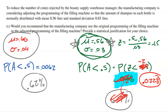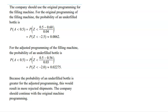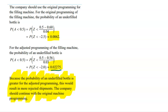The final conclusion stands: if we stay with the original parameters, we're less likely to have underfilled bottles. Because the probability of an underfilled bottle is greater under the adjusted programming, this would result in more rejected shipments. The company should continue with the original machine programming. Always write a clear concluding sentence — don't just report two probabilities without telling the reader what they mean.